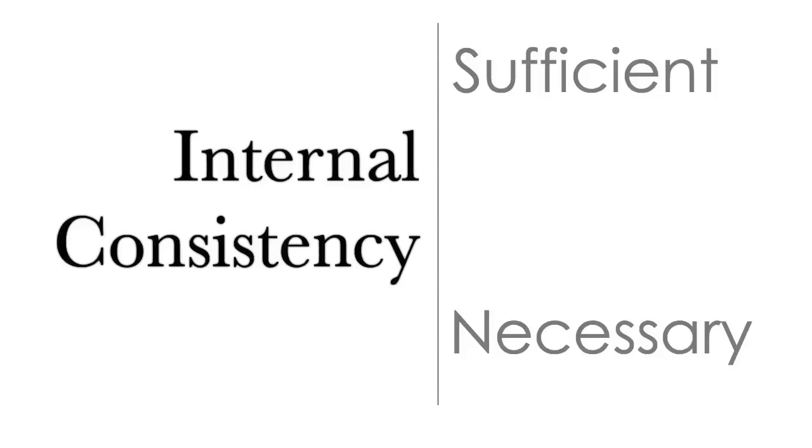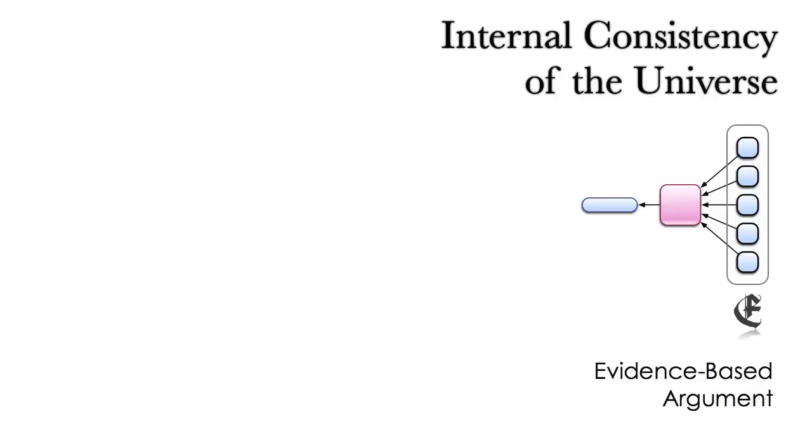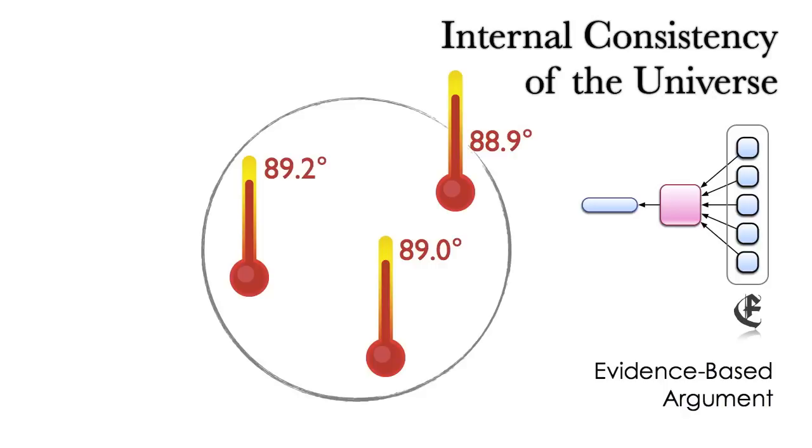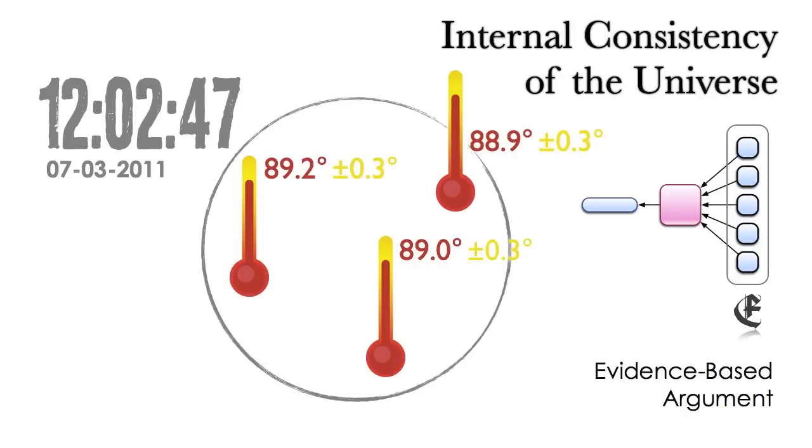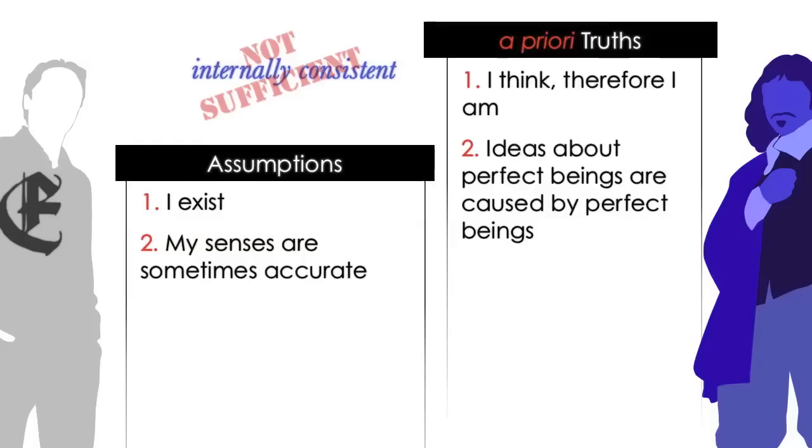While internal consistency is not a sufficient condition for an epistemology, it does appear to be a necessary condition. And the argument of evidentialism is that it is coherent because the physical universe itself is coherent. This is not just an assumption. This is an evidence-based argument. It can be built off of evidence-based sub-arguments, such as the fact that multiple independently manufactured temperature gauges will all report the same temperature in the same geographical location at the same time within a given error range.